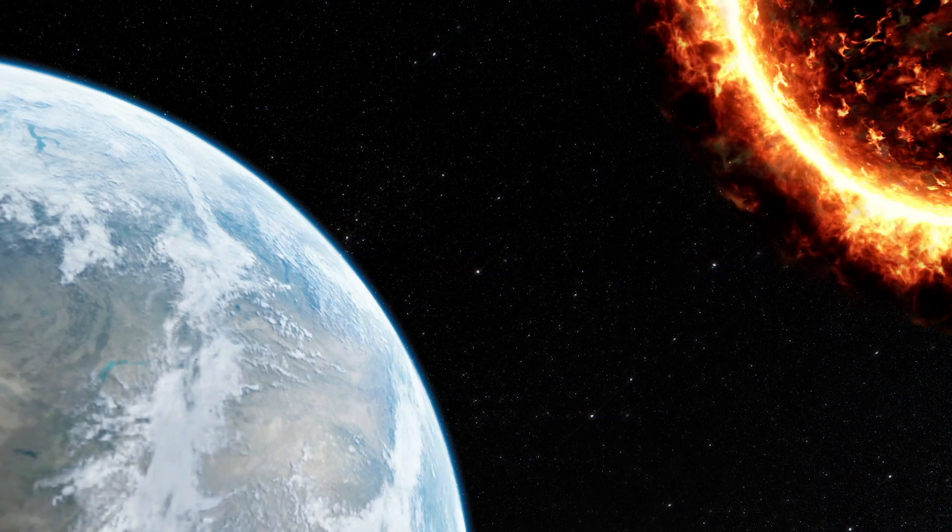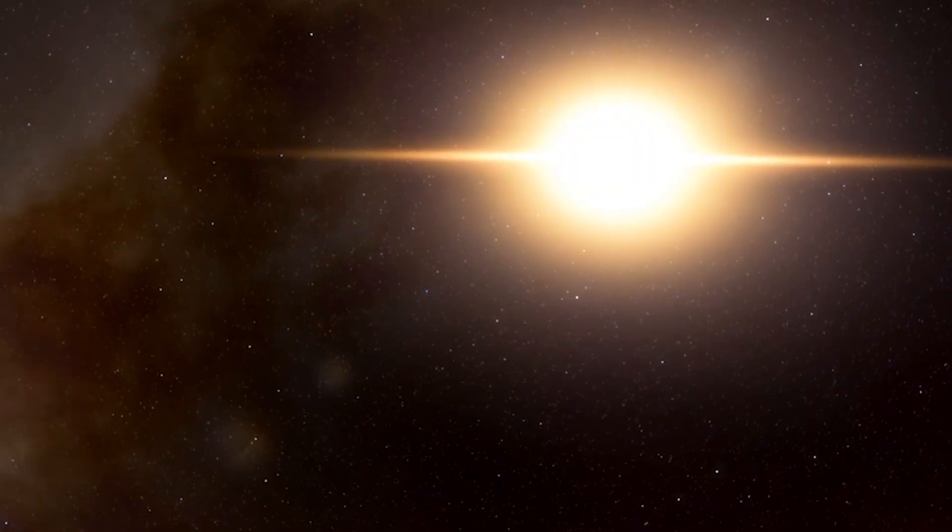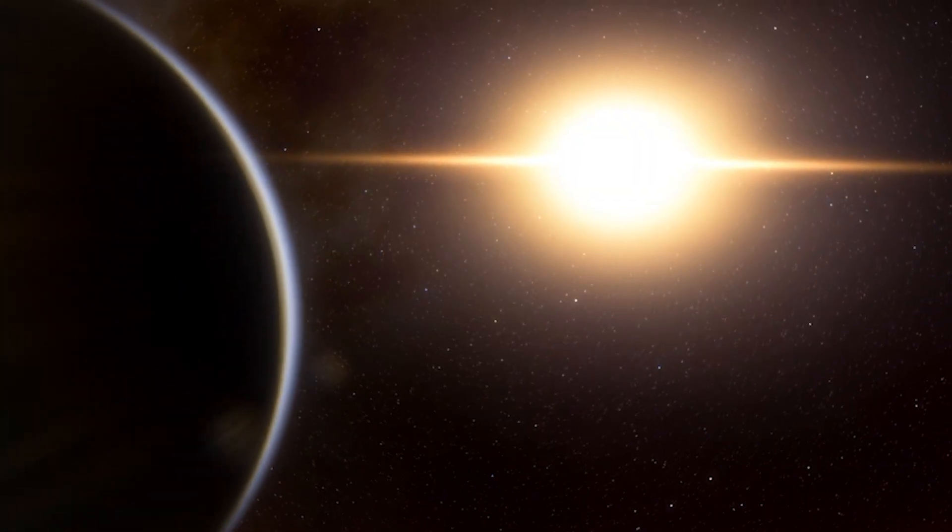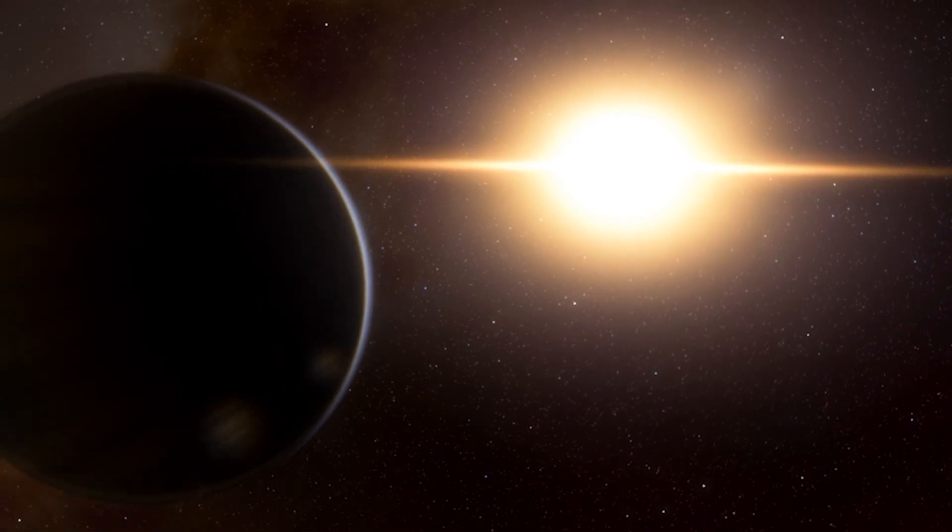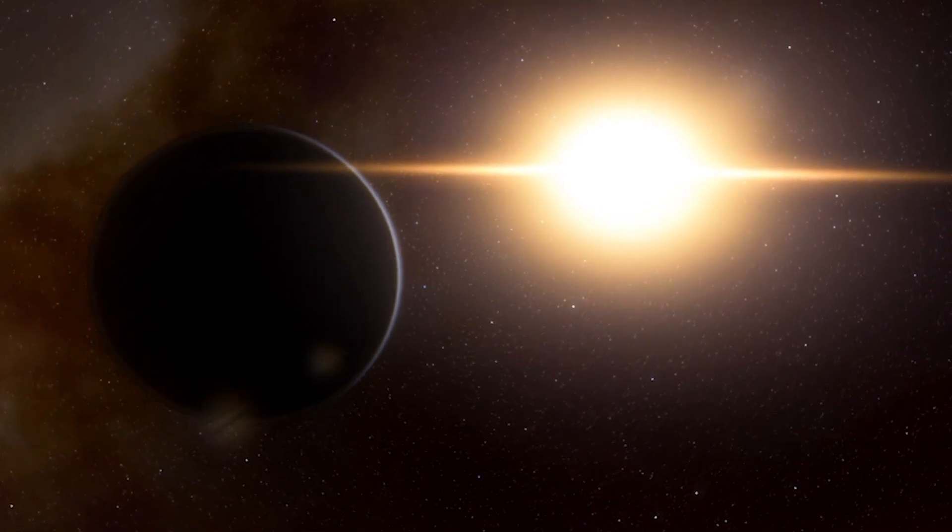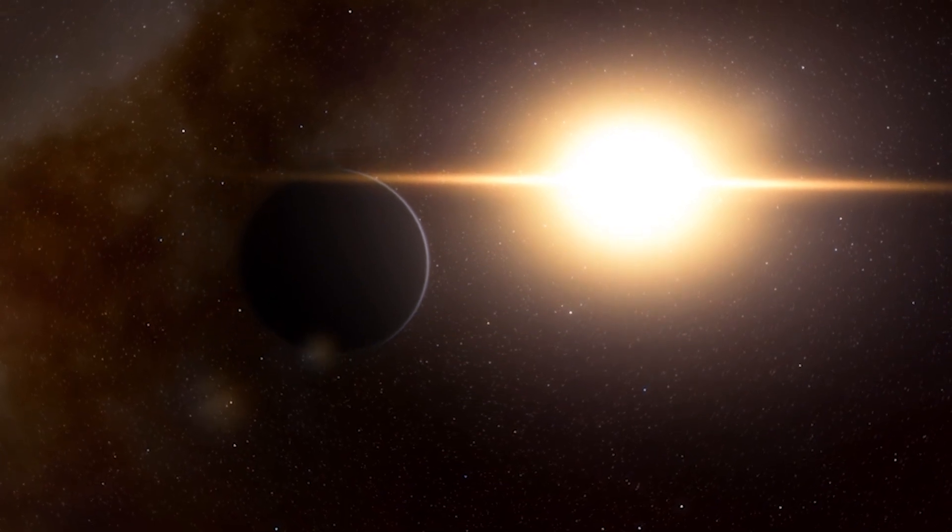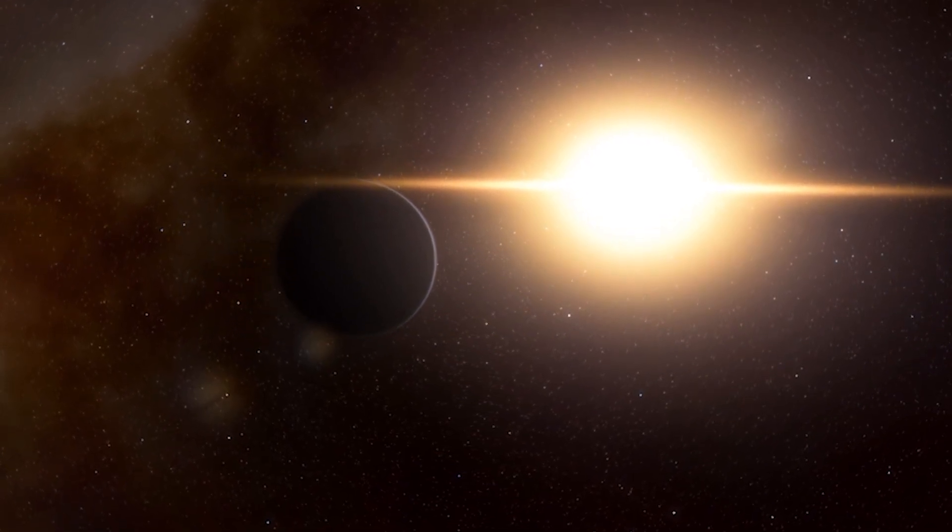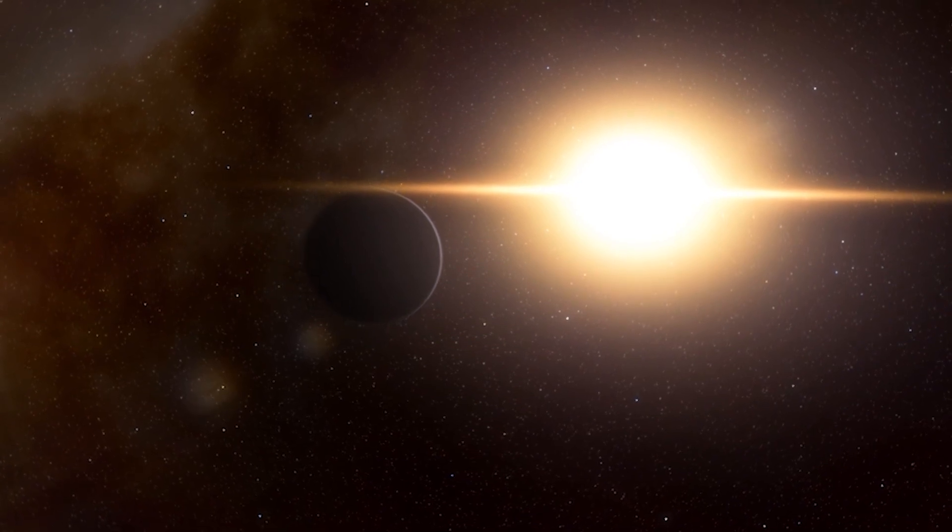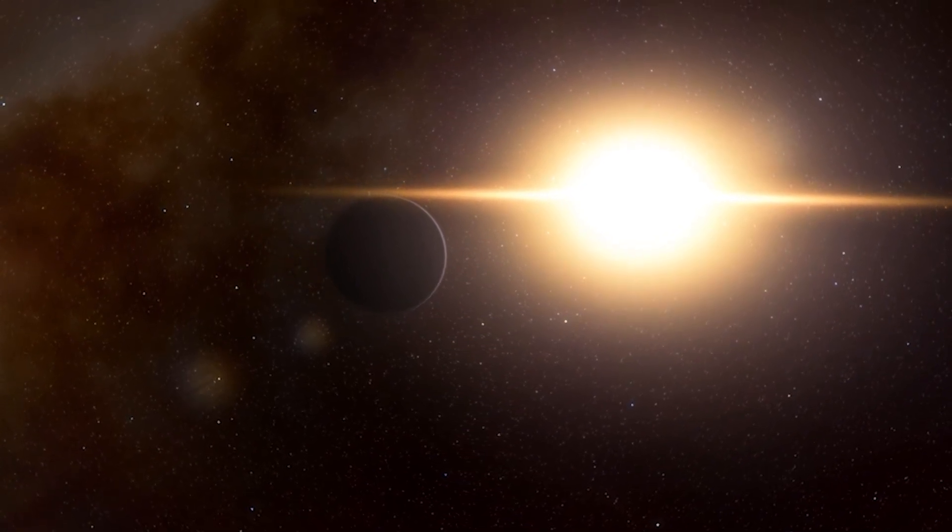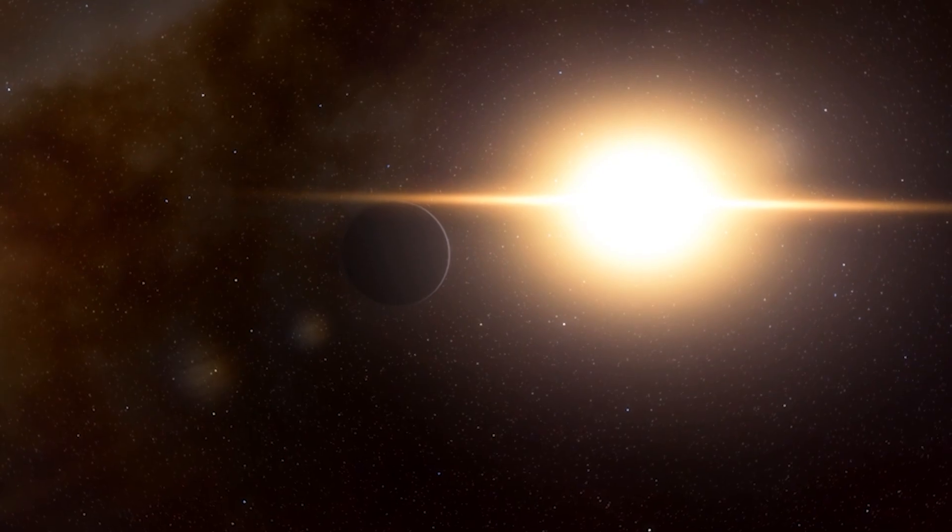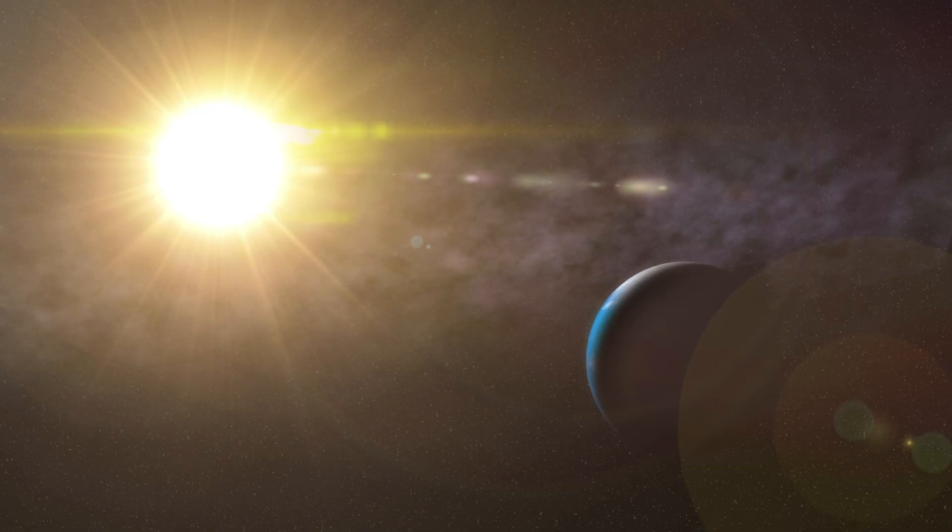To create a video with the results of the observations, the scientists combined the solar orbiter photos with images of the star taken by NASA's stereo spacecraft. It so happened that both spacecraft observed the Sun at the same angle, so scientists were able to obtain the highest detail of the processes occurring in the Sun's atmosphere and on its surface.